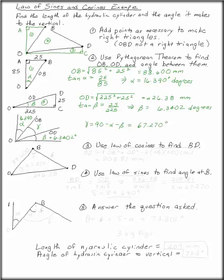Now we have two sides and an angle between them. We found OB was 88.600, and OD was 226.38. The angle between them was 67.270. That's your law of cosines. Specifically,